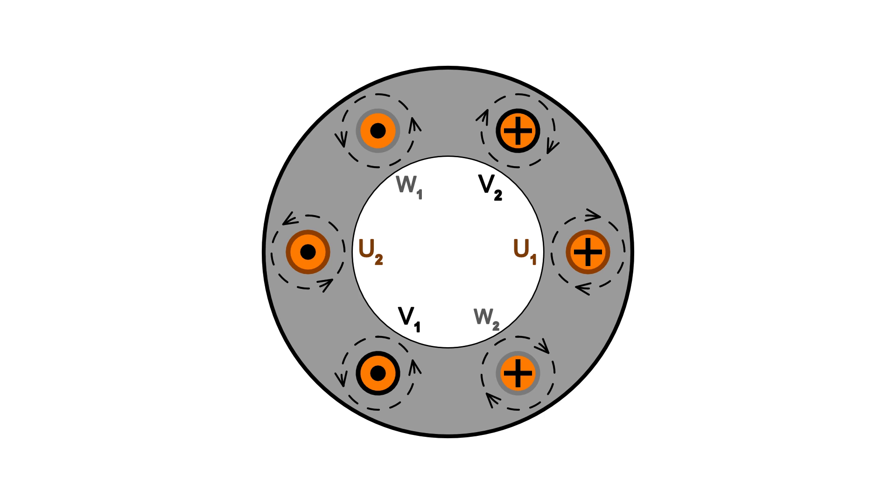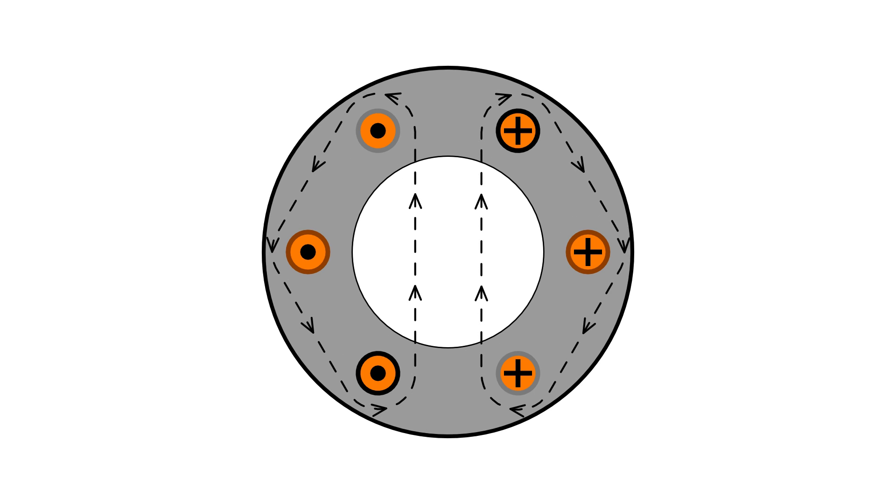However these magnetic fields will obey the laws of physics and meld into each other on each side while repelling each other down the middle. So we end up with a magnetic field that looks like this.